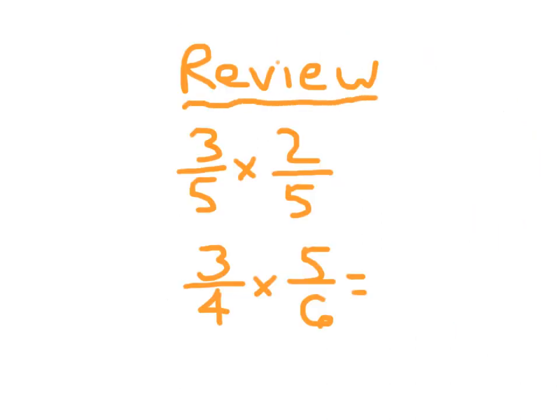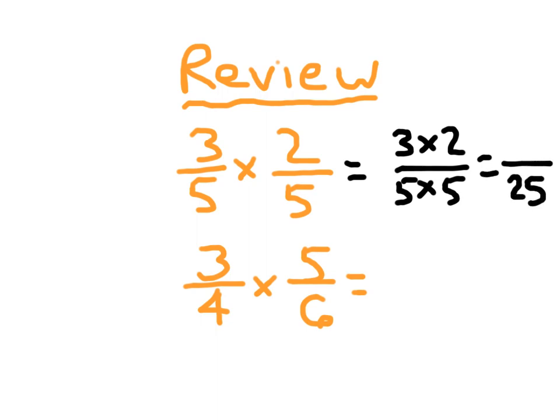Alright, it's time to review. I have two final problems to show you. First one is 3 fifths times 2 fifths. To multiply 3 fifths times 2 fifths, we multiply the numerators together. And we multiply the denominators together. In this case, they're still the same denominator, but we still multiply them together. And that's why I wanted to show you this problem here. 5 times 5 is 25. And 3 times 2 is 6. And so we have 6 twenty-fifths. And 6 twenty-fifths is in simplest form.